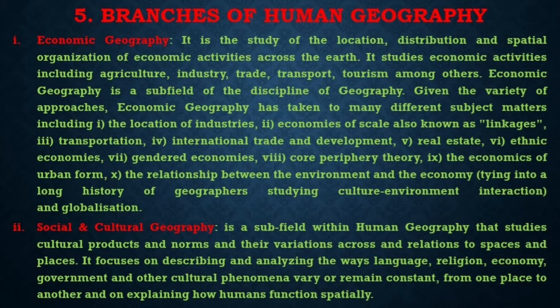The second sub-branch is social and cultural geography. Social and cultural geography is a sub-field within human geography that studies cultural products and norms and their variations across and relations to spaces and places. It focuses on describing and analyzing the ways language, religion, economy, government, and other cultural phenomena vary or remain constant from one place to another, and on explaining how humans function spatially.